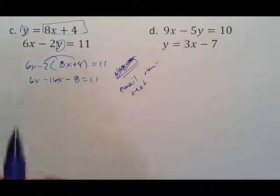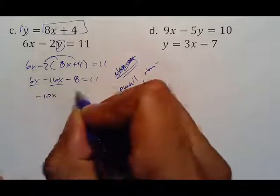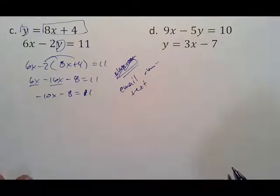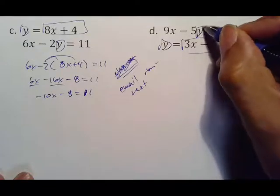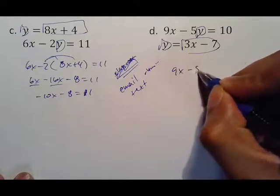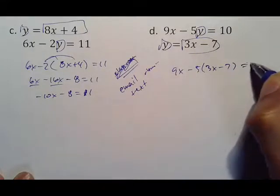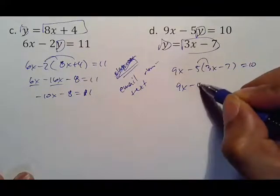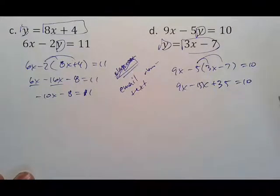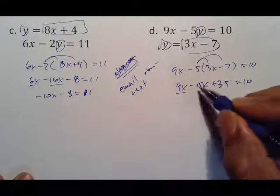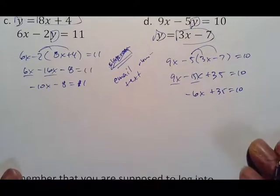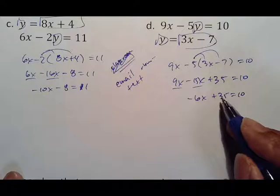Once you have multiplied: 6 minus 16, negative 10x minus 8 equals 11. That is your answer. And the last one before we get ready to go to our homework, this is your setup. That's what's going in for y, so we put 9x minus 5 parentheses 3x minus 7 equals 10. Bring down your 9x minus 15x. Don't forget that's a negative times a negative which is plus 35. 9 minus 15 is negative 6x plus 35 equals 10.